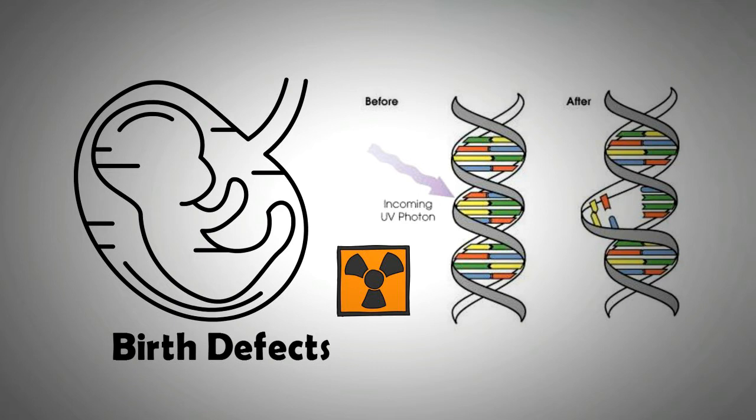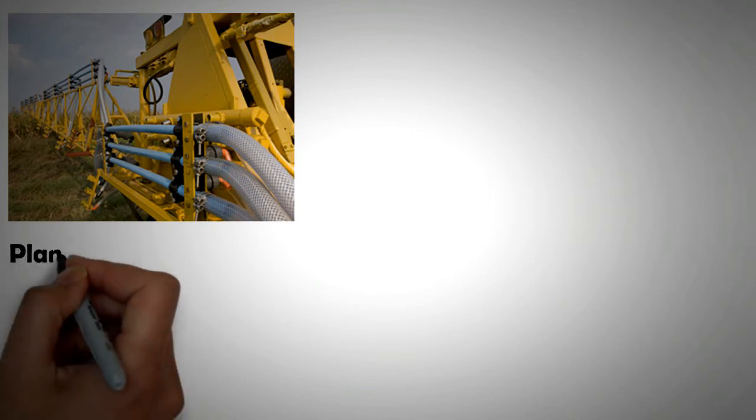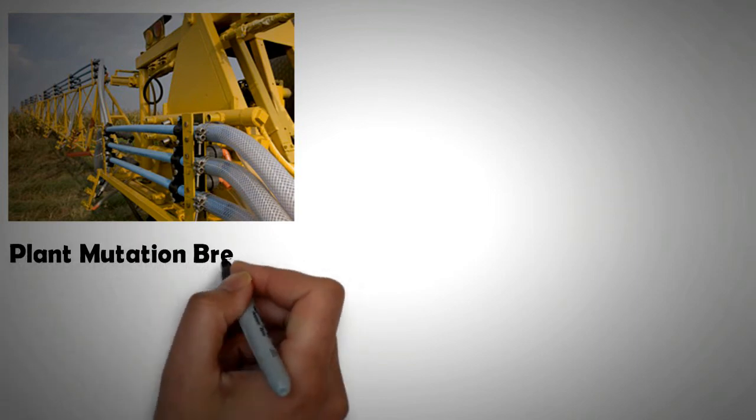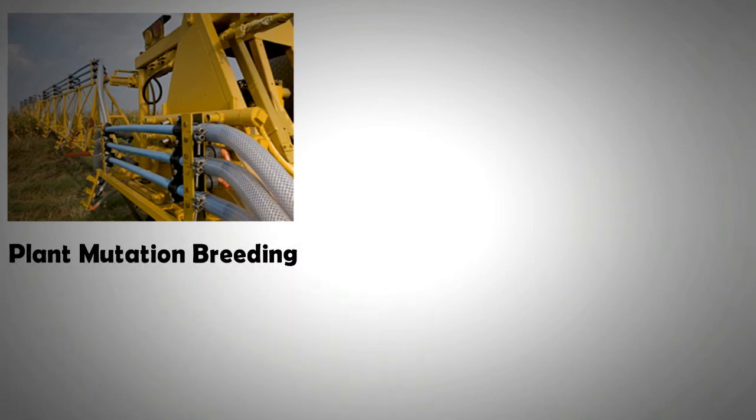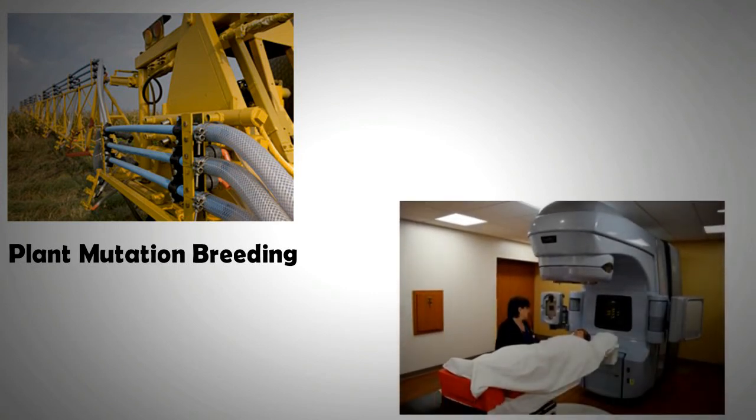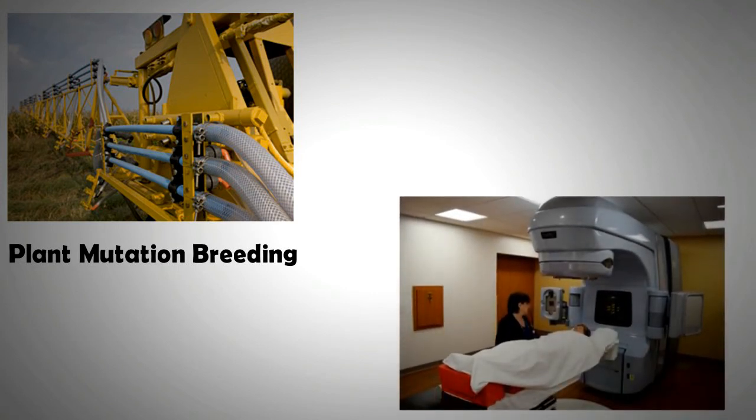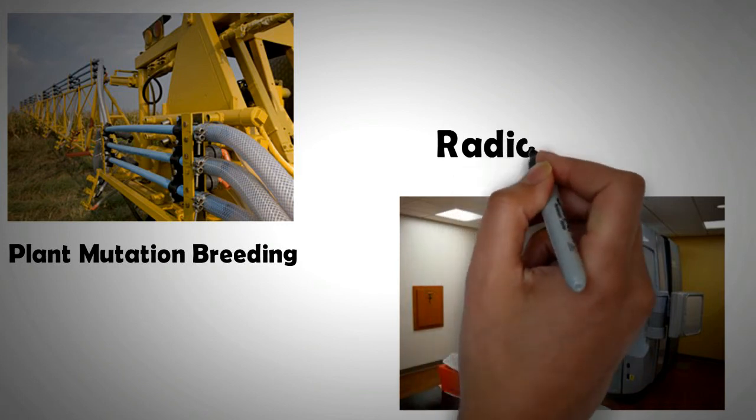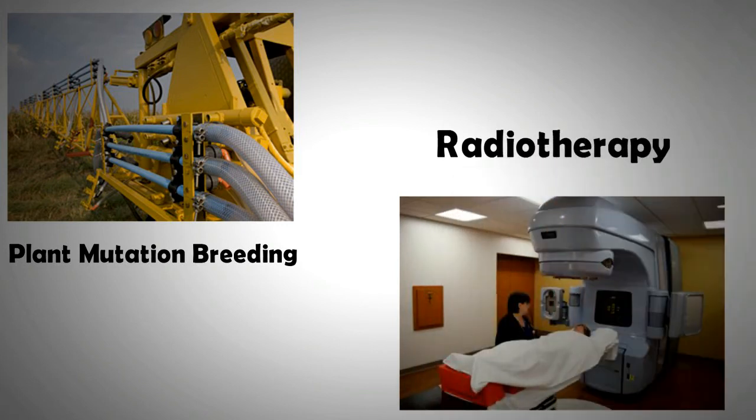Nonetheless, radiation has also been used to safely create new variety of seeds that enhance the quality of agriculture. High yield crops can be created that are also disease resistant. The same gamma rays can also be used for radiotherapy or for killing targeted cancer cells. So part of the theory that DNA can be modified using gamma rays is true.